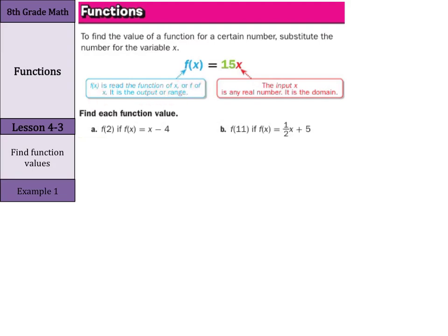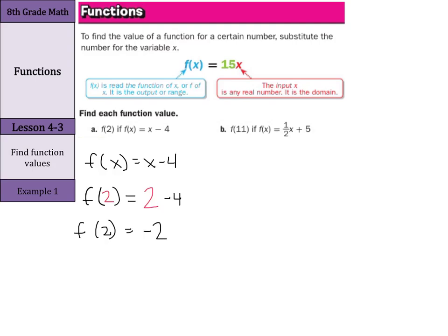To find our function values, the first step is to rewrite the function. So f of x equals x minus four. Then we substitute two in for x. So f of two equals two minus four. f of two equals negative two.